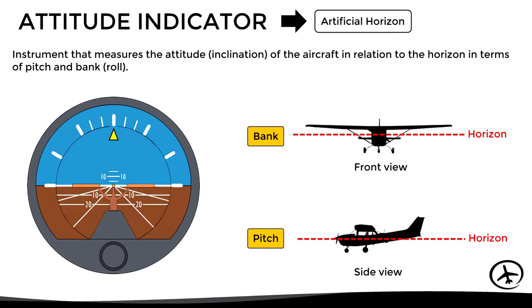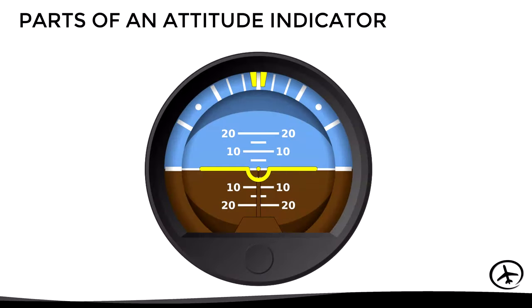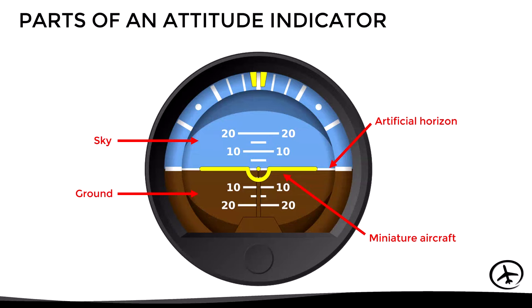The indication of the instrument is quite intuitive. Let's look at its parts. First, we have the miniature aircraft in the middle, which represents the wings and nose of the aircraft. Then we have the artificial horizon, represented by a white line that separates the upper part — representing the sky — from the lower part, which represents the ground. The instrument also has several markings and scales.